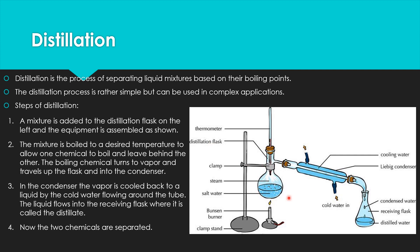A mixture is added to the distillation flask at the beginning and the equipment is assembled. The mixture is boiled to a desired temperature to allow one chemical to boil and leave behind the other. We don't want to overheat our substance and cause everything to evaporate. The boiling chemical turns to vapor, travels up the flask, and because everything is capped it will travel into the condenser. Gases always want to expand into whatever space they can, and a small escape valve or opening allows air already in the container to escape.